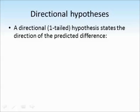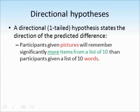Now let's look at a directional hypothesis. This is one type of alternative hypothesis, because it's the alternative to the null hypothesis. A directional, or one-tailed, hypothesis states the direction of the predicted difference. For example: 'Participants given pictures will remember significantly more items from a list of 10 than participants given a list of 10 words.' The word 'more' tells us which direction we expect the change to be — which condition of the independent variable will perform better or worse. Words like faster, slower, better, or worse are all indicators of a directional hypothesis.